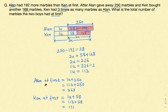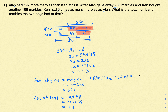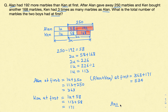So this is what Ellen and Ken had at first separately. We have to find the total number of marbles the two boys had at first, so it will be Ellen plus Ken: 363 plus 171, which gives us 534 marbles. The two boys at first had 534 marbles. That's the solution to this question. Hope you liked it. Keep watching and don't forget to subscribe to my channel. Thank you.